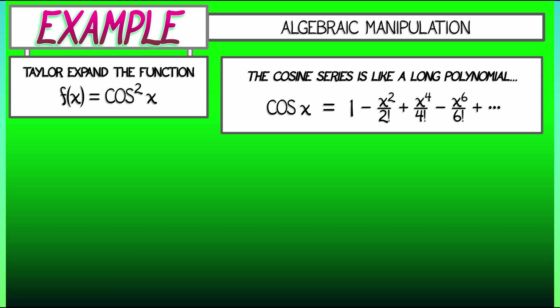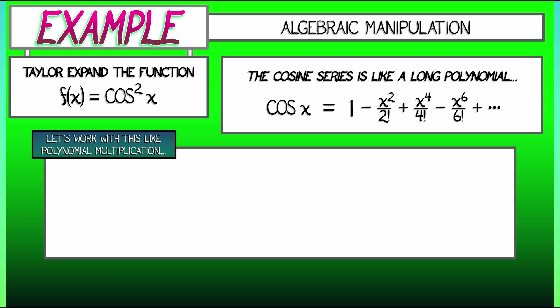Now, let's work with this just like polynomial multiplication. So that cosine squared of x is what? It's the cosine series times the cosine series. Now what do we do with this? Well, we just multiply all these terms out. It's kind of like foil, right? First, outside, inside, last, but a little more complicated.